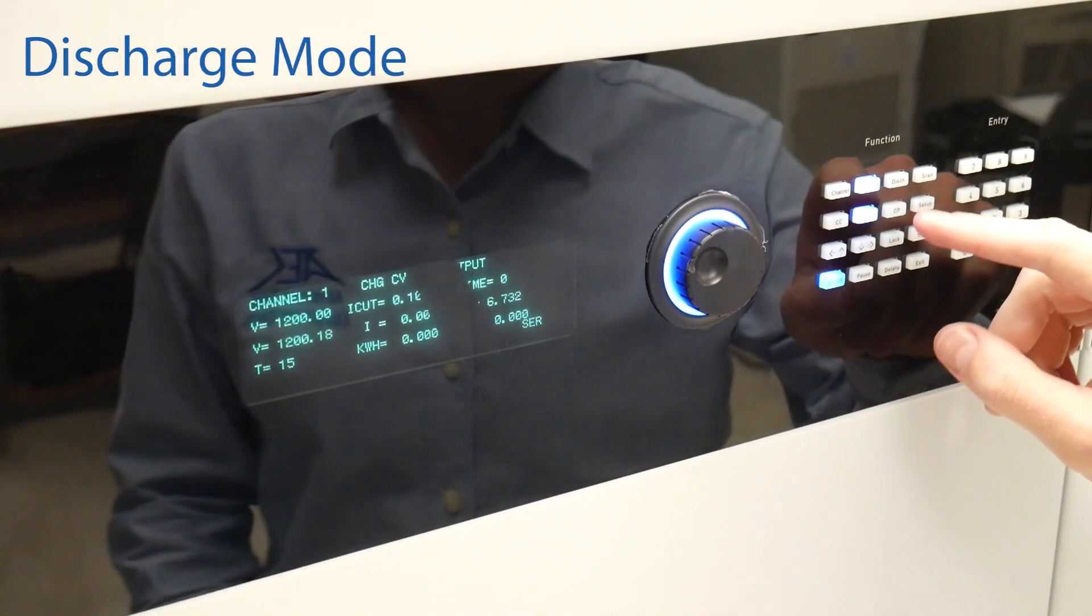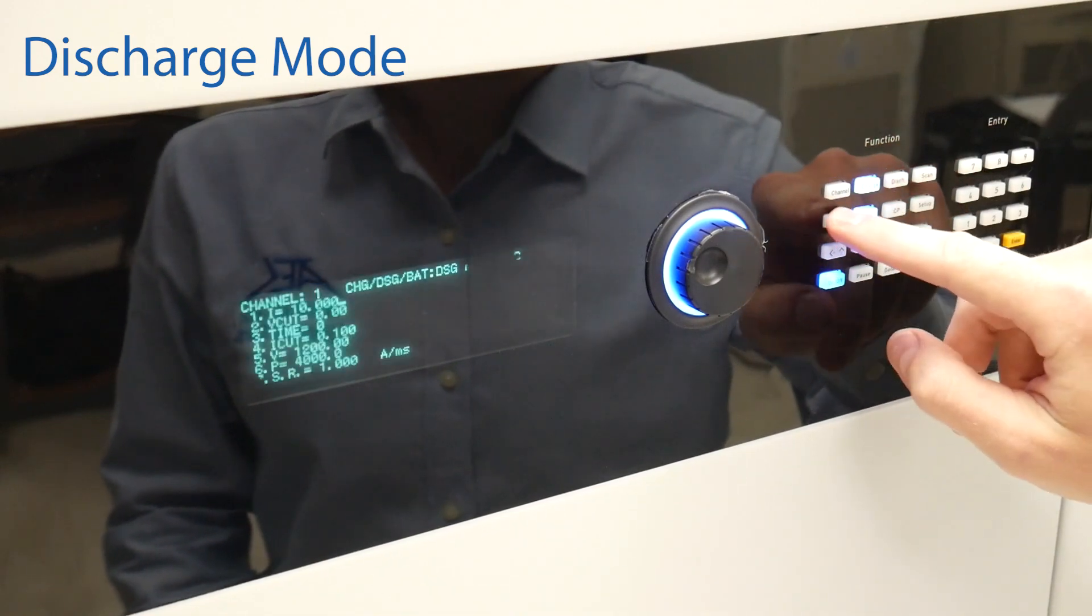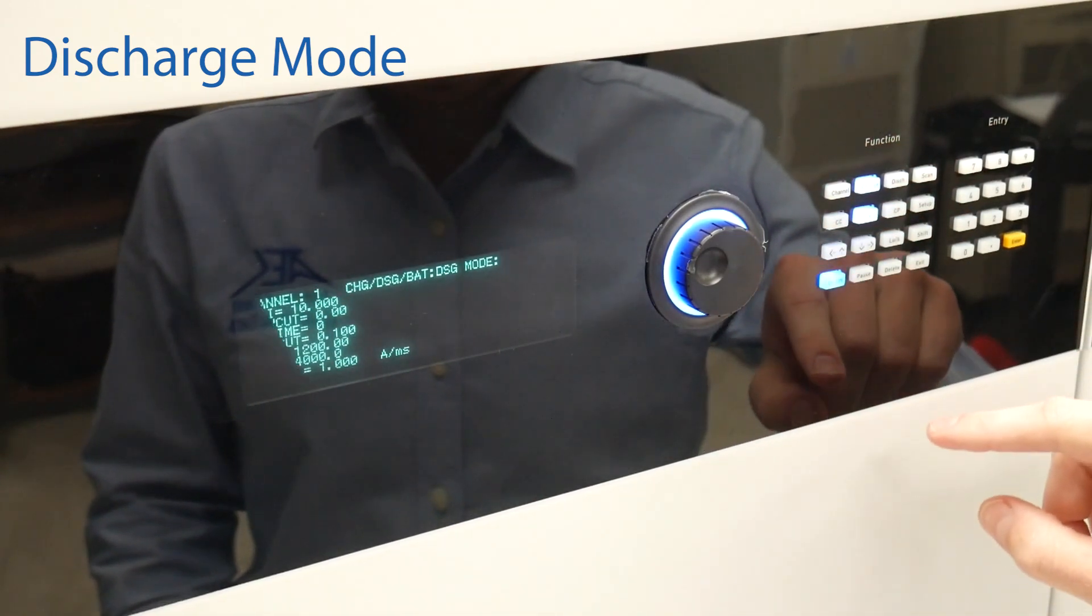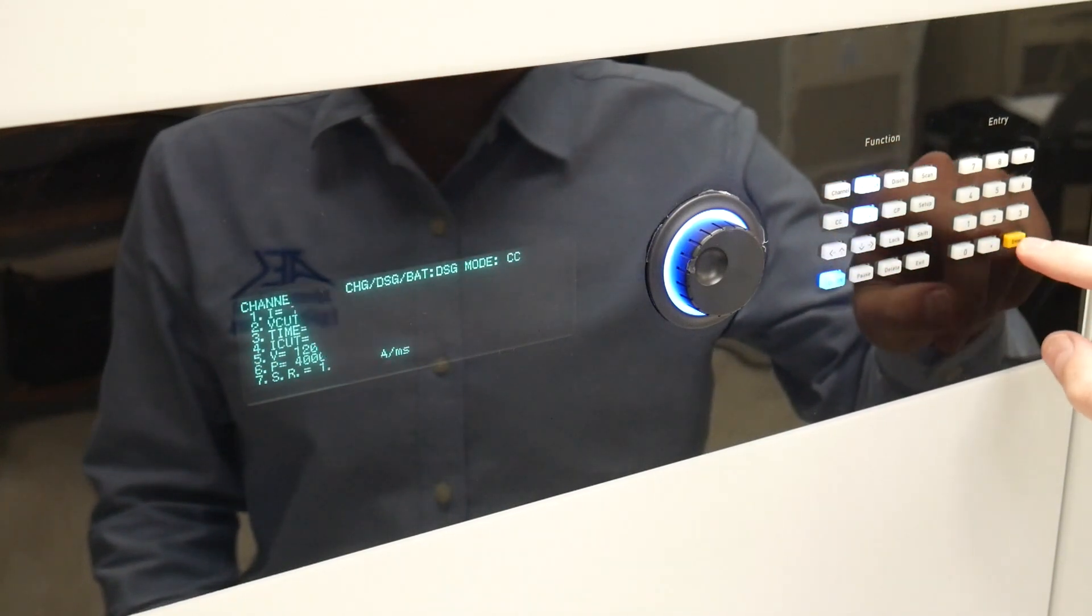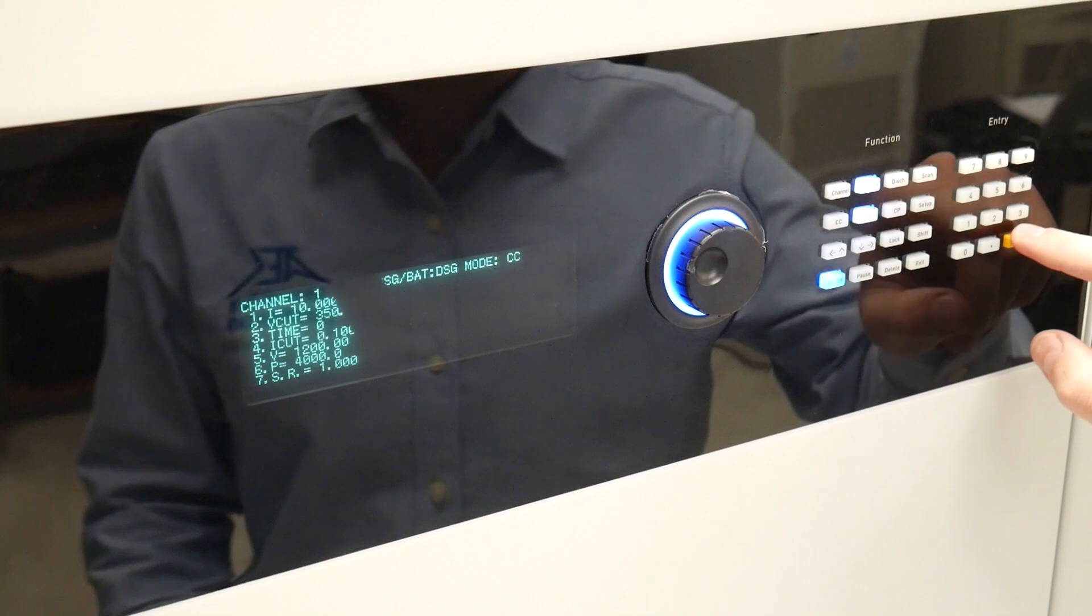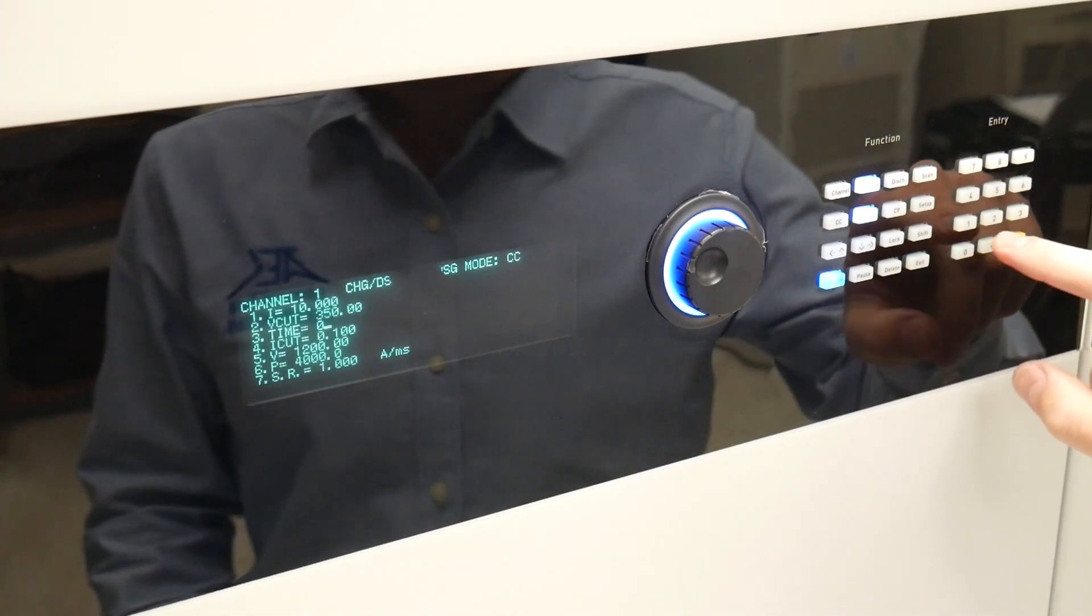To use the 17-040E to discharge a battery in constant current mode you push discharge then CC. Now you adjust parameters starting with the current which we set to 10 amps, cutoff voltage at 350 volts which is the voltage level at which current will stop being drawn.